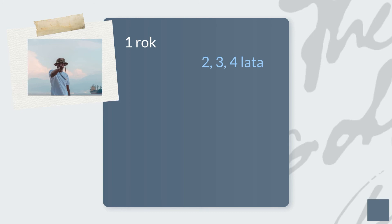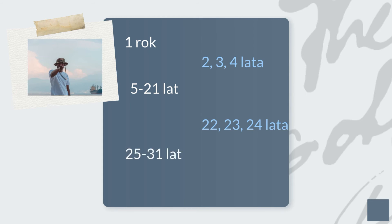Ile twoje dziecko ma lat? Ma trzy lata. Ma cztery lata. Ile masz lat? Mam pięć lat. Mam dziesięć lat. Mam piętnaście lat. Mam dwadzieścia lat. Mam dwadzieścia jeden lat. But: Mam dwadzieścia dwa lata. Mam dwadzieścia trzy lata. Mam dwadzieścia cztery lata. Mam dwadzieścia sześć lat. Mam dwadzieścia dziewięć lat. Mam trzydzieści jeden lat. Mam trzydzieści dwa lata. Mam trzydzieści trzy lata. Mam trzydzieści cztery lata.